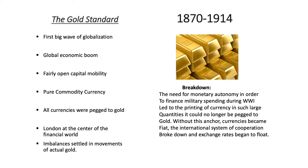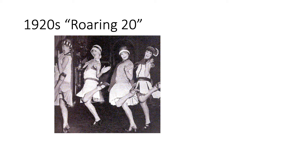The international system of cooperation broke down, exchange rates began to float, and the first big wave of globalization ended with the resolution of World War One. We then enter into the 1920s — the jazz era, the flappers, the party animals. This is the Roaring Twenties.